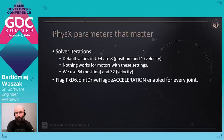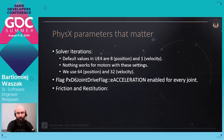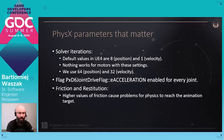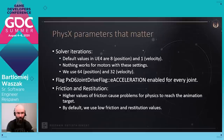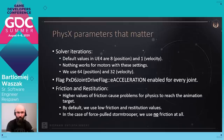Going forward, we are using a flag called e-acceleration, which is enabled for every joint. It makes it easier to set up all parameters related to mass especially. On the topic of friction and restitution — these parameters tend to cause a lot of problems for physical animation, because higher values of friction make it harder for physics to reach the animation target. By default, we use low values for friction and restitution. In the case of the force-pulled stormtrooper, we actually use no friction at all to make it easy for physics to reach the animation target.